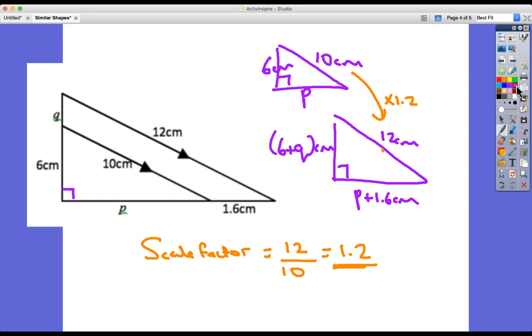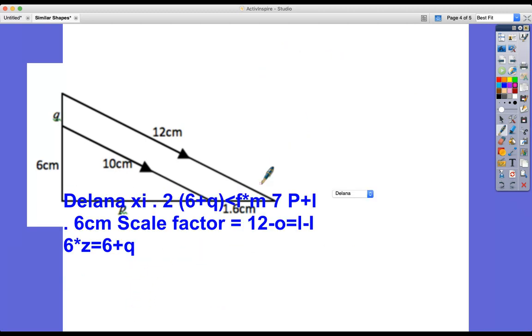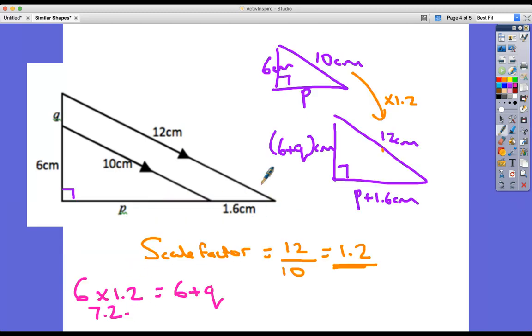So now I can work out what the values of P and Q are, because I know that six multiplied by 1.2 equals six plus Q. Now I can just work it out on my calculator. So six times 1.2 is equal to 7.2 equals 6 plus Q. So that means that Q must be 1.2.